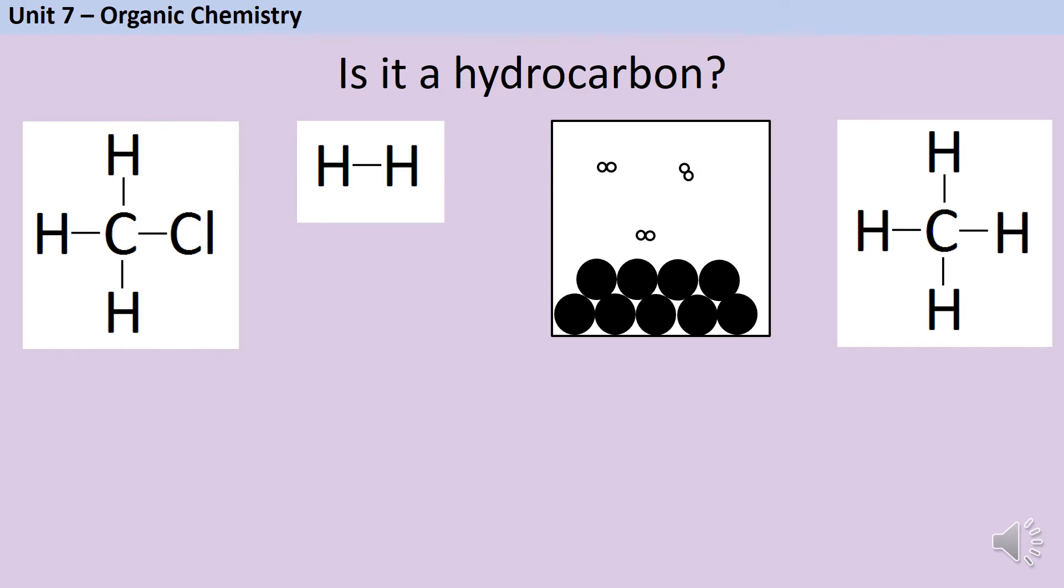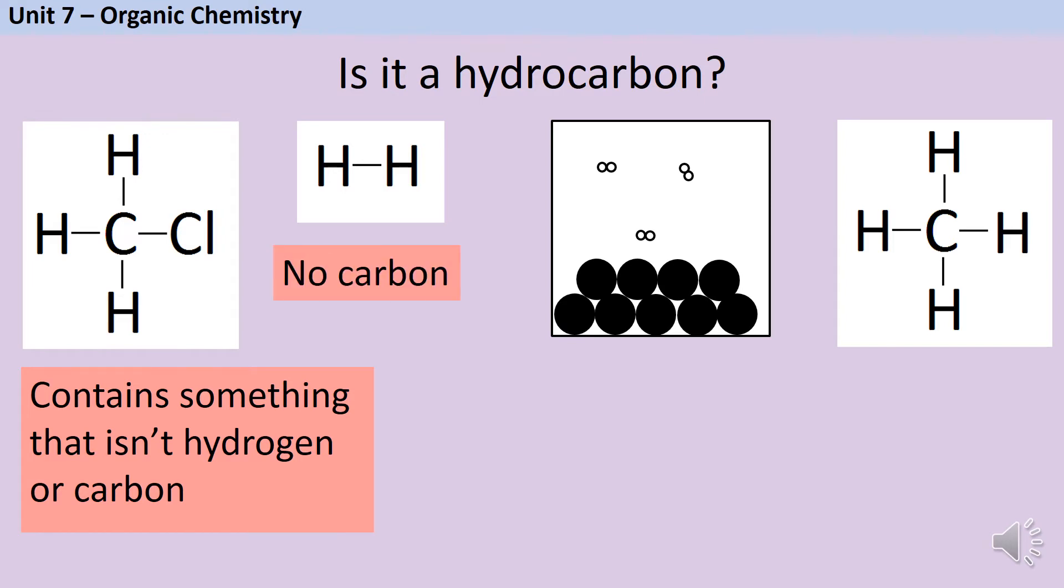Our first substance is a molecule called chloromethane and although it's a compound and it does contain hydrogen and carbon, we also have that chlorine atom in there so no this isn't a hydrocarbon. Our second substance is a hydrogen molecule so again this is not a hydrocarbon because it doesn't contain any carbon.